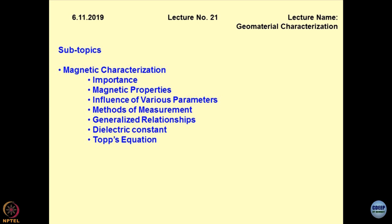Under the head of magnetic characterization, I will be discussing the importance followed by what are the magnetic properties of geomaterials, what are the factors which influence them, what are the methods of measurement of these properties, and some generalized relationships used for determining the magnetic properties — particularly the dielectric constant — and how the dielectric constant has been used for determining the volumetric moisture content of geomaterials, which is a very contemporary thought.